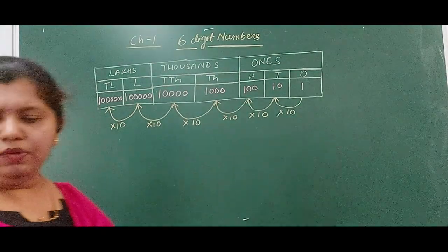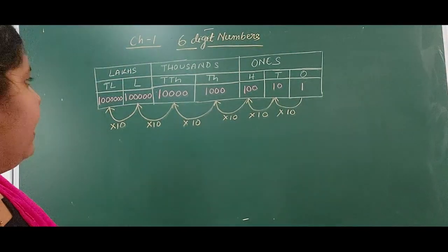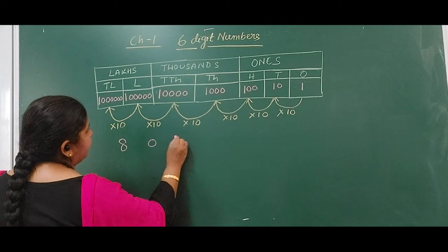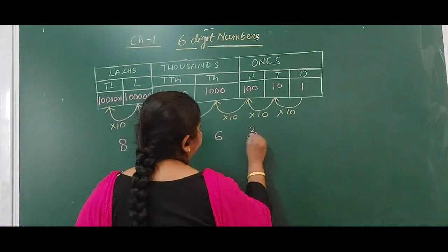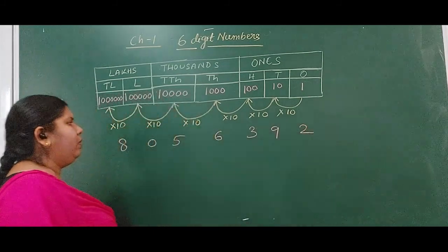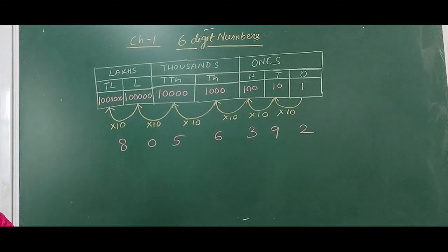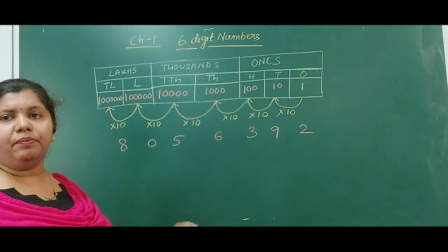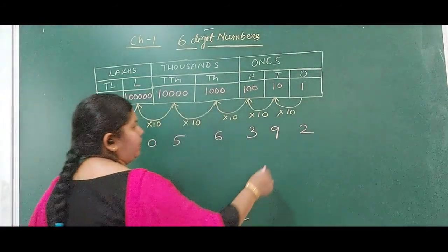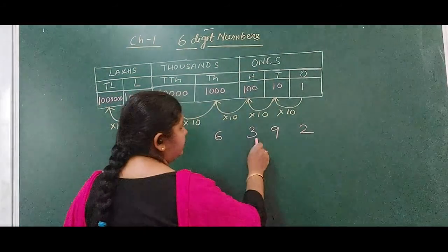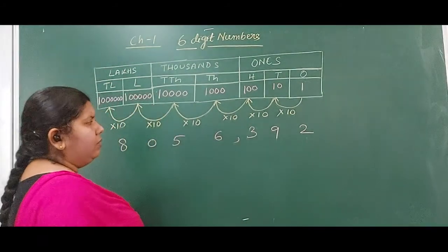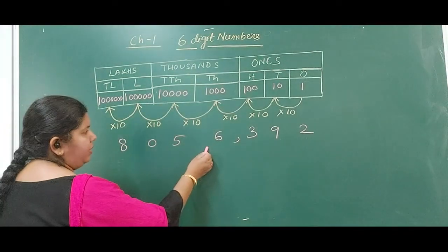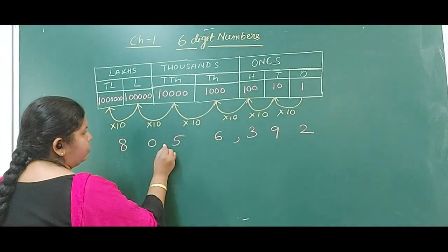Now let me take one example. Suppose my example is 8, 0, 5, 6, 3, 9, 8. Wait — the number is 8056398. So when I have a number in this way, the first thing I have to do is use the separators to separate the periods. We know that the first period, that is the ones period, has 3 digits. So count 3 from the right and put a separator.